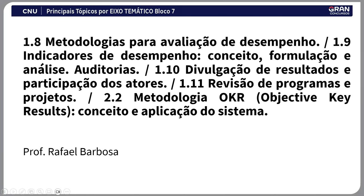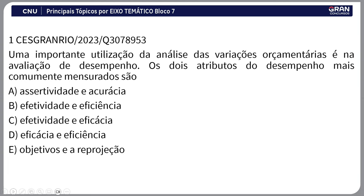Aqui é uma junção de um bocado de temas, vários teminhas espalhados no edital que compilei. Vamos à primeira questão de 2023 da Sesgra Rio: uma importante utilização da análise das variações orçamentárias é na avaliação de desempenho. Os dois atributos de desempenho mais comumente mensurados são eficiência e eficácia. O gabarito é letra D. Precisamos distinguir eficiência, eficácia e efetividade para não errar.